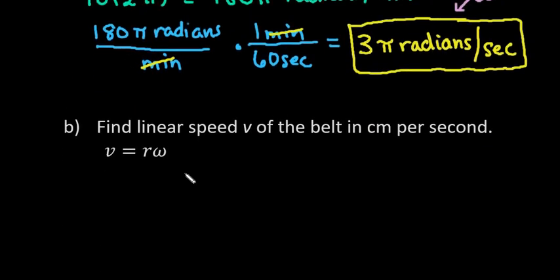Okay, so for this, all we would have to do is our velocity is going to equal our radius, which is 10 times our angular speed, which is 3π radians per second.